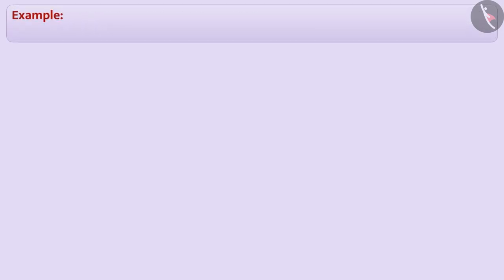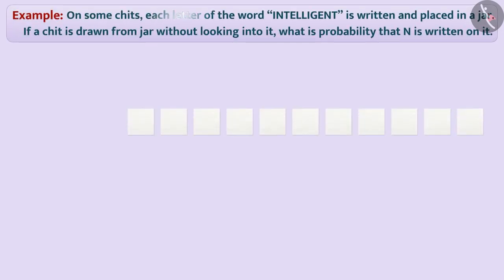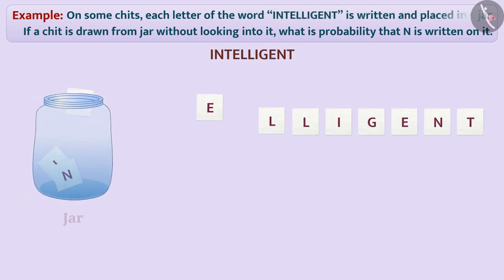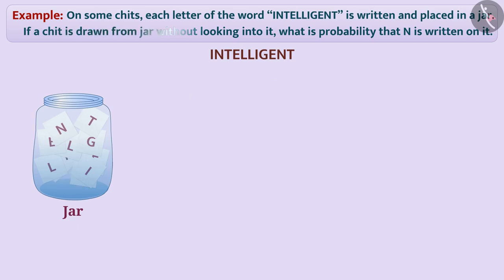Next example: On some chits, each letter of the word intelligent is written and placed in a jar. If a chit is drawn from the jar without looking into it, what is the probability that n is written on it?